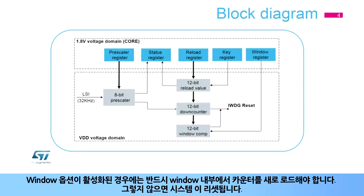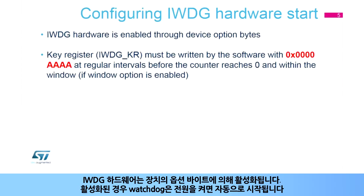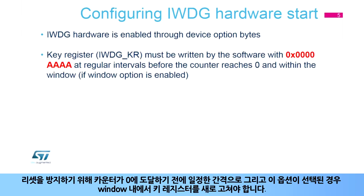If the window option is enabled, the counter must be refreshed inside the window; otherwise, a system reset is generated. The IWDG hardware is enabled by the device's option bytes. If enabled, the watchdog automatically starts at power on. To prevent any reset, the key register must be refreshed at regular intervals before the counter reaches zero and within the window, if this option has been selected.